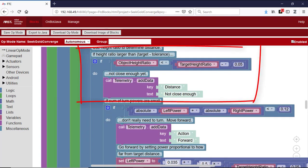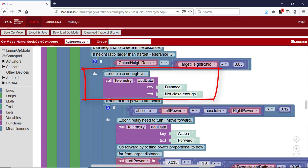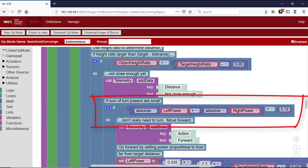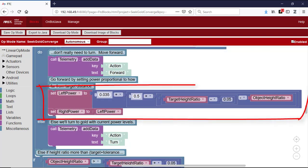It compares the ratio to a target ratio that corresponds to one robot neck length from the mineral. If the robot is not close enough, it checks whether it needs to turn first by checking the previously calculated turn power levels. If no turn is needed, it calculates motor power levels proportional to how far it needs to move forward.